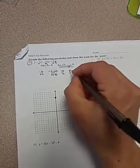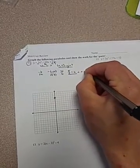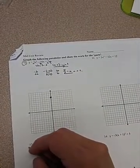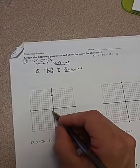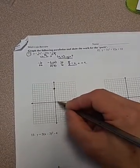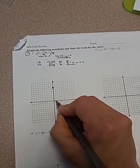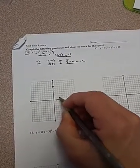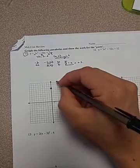So the axis of symmetry is at x equals 5 thirds. Well, if I'm going to put that on the graph, I'm just going to have to estimate it a little bit. So 5 thirds, 3 thirds is the same thing as 1. 6 thirds would be the same thing as 2, so 5 thirds is going to be about right here.